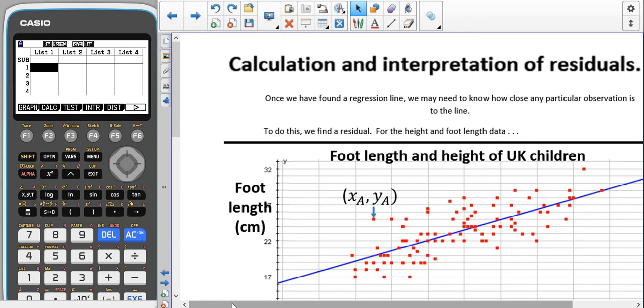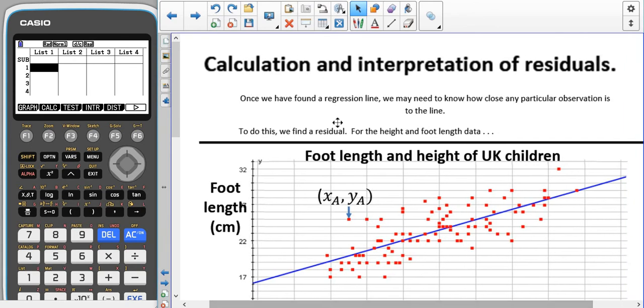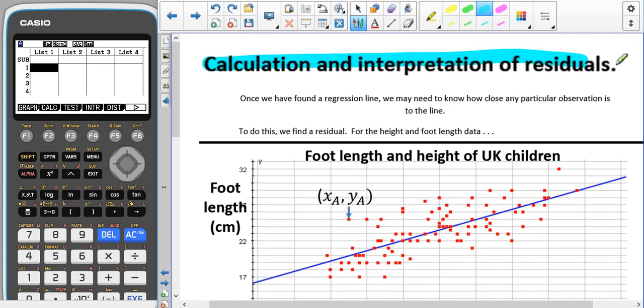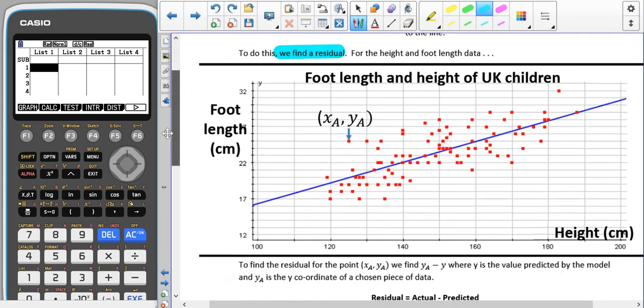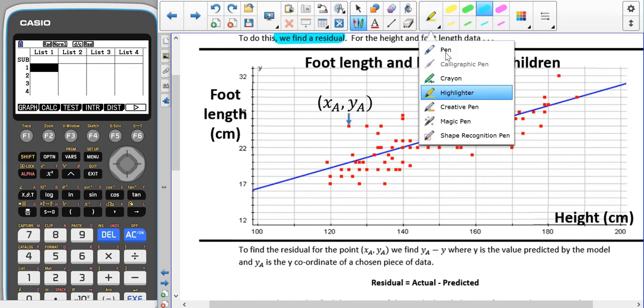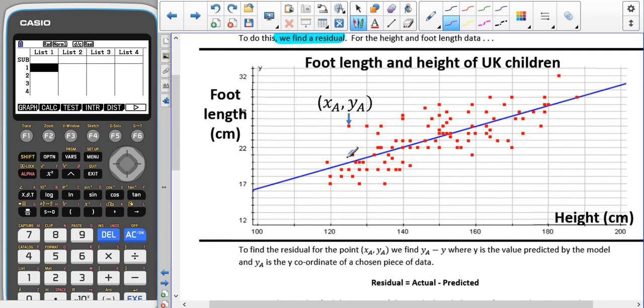The last part of our regression topic is calculating and interpreting residuals. Once we have found a regression line, we may need to know how close any particular observation is to the line. To do this, we have to find the residual. In this example, we have height data, foot data, and a point that we are looking at.